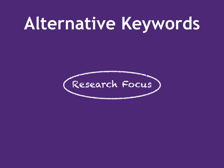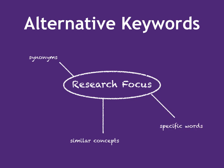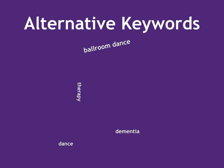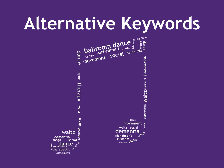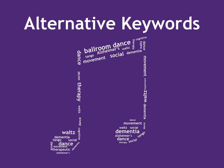After identifying your keywords, you should come up with alternative keywords. These alternative keywords may be synonyms, similar concepts, words that are more specific or more general, or acronyms. Having a variety of keywords on hand makes it easier for you to change your search if you hit a brick wall while looking for articles. There isn't a single magic search for your topic. You will need to do several searches to find all of the information you need.